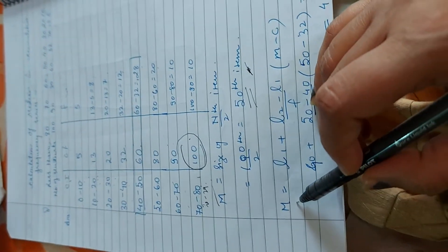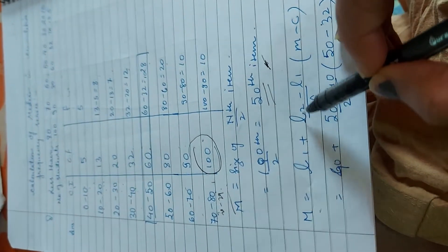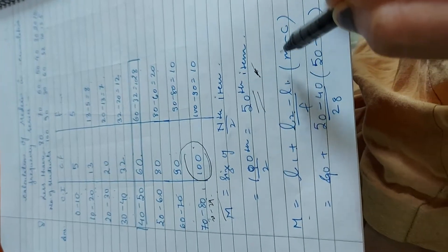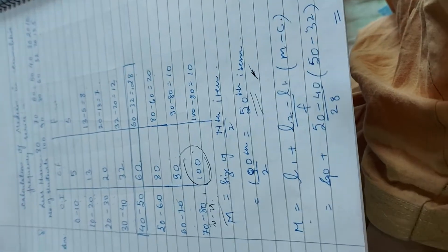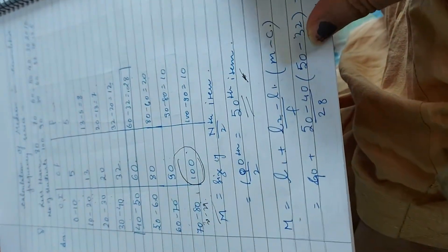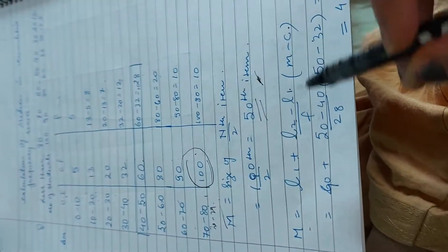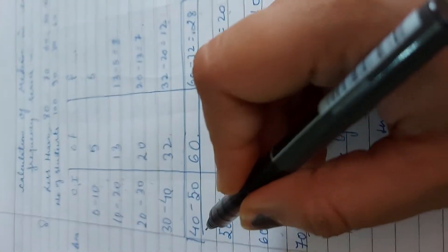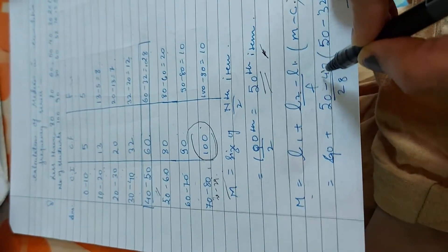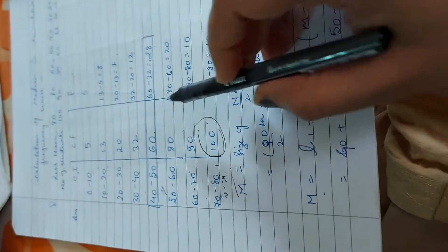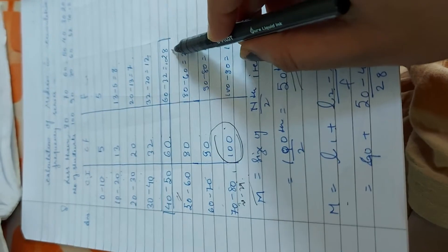Now we have m is equal to l1 plus l2 minus l1 by fm minus c. This formula will be kept in place because this is the easiest way of calculation median. First of all, we will see which lower limit is 40 plus 50 minus 40 by frequency. What is our frequency? 28.